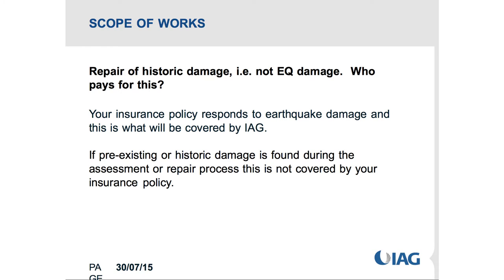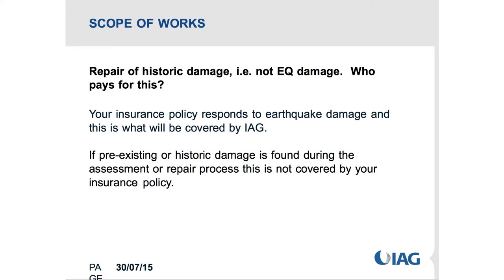Regarding repair of historic damage - non-earthquake damage - generally if it's historic damage it's not covered by your insurance policy. Your policy responds to earthquake damage and that is what's covered. If pre-existing or historic damage is found during assessment or the repair process, this is not covered. However, if we have to touch something because it also has earthquake damage, there may be some cover to the historic damage. If part of the house is earthquake damaged and part is not, we only respond to the earthquake-damaged part.